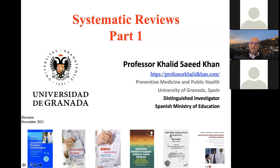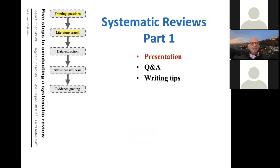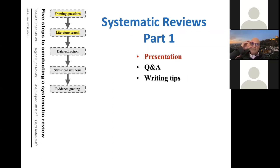You can see my introduction here, including images of a systematic review book that I have published, now in its third edition, already translated from English into German and Chinese. From the book, an article shows the five different steps of systematic reviews: framing the question, searching the literature, extracting data from the literature, synthesizing the data, and generating recommendations from it — a process called grading. The session will combine presentation with open question and answer, alongside tips on how to write up for publication.